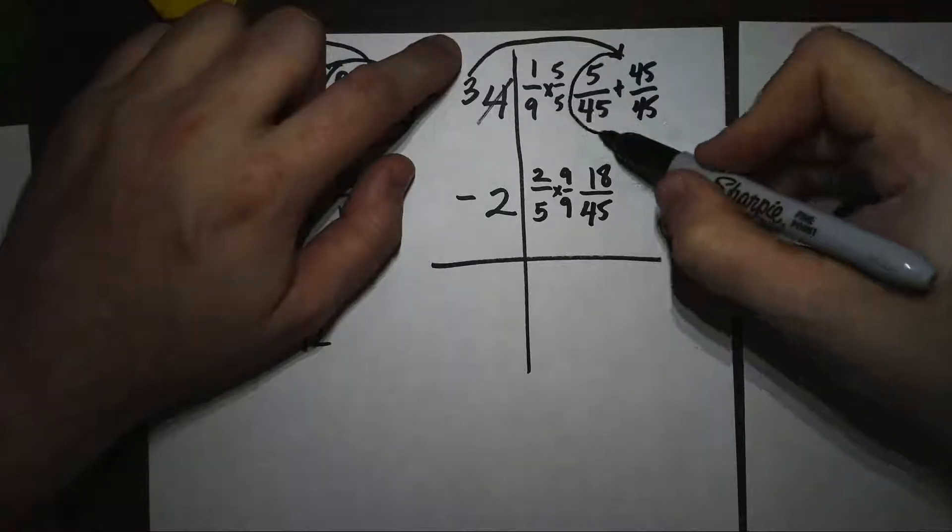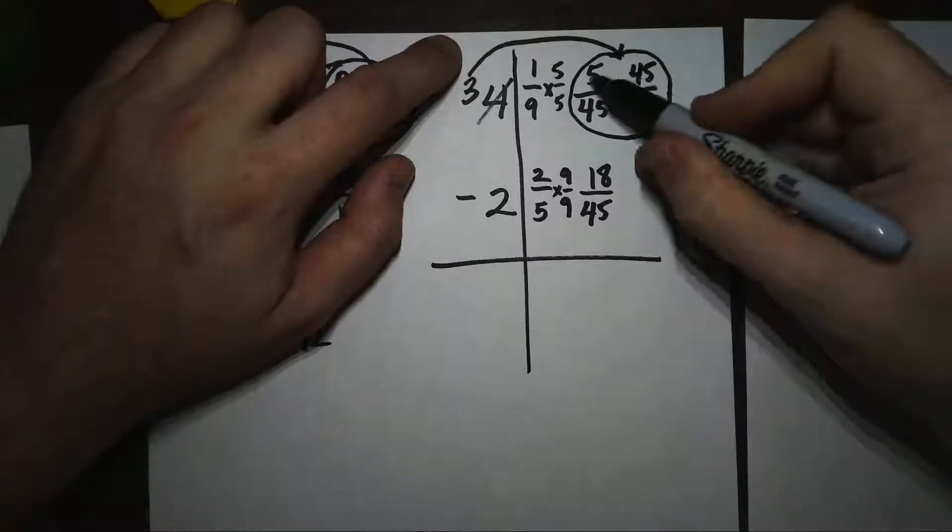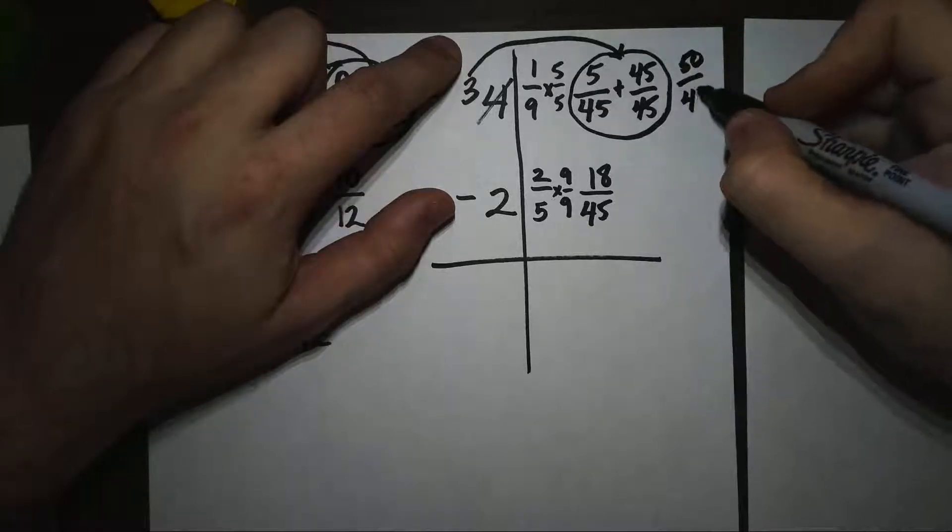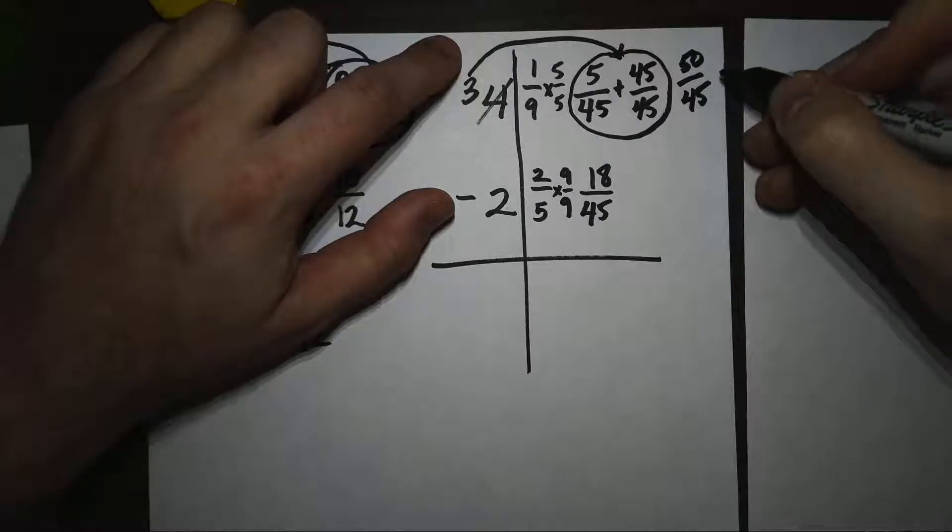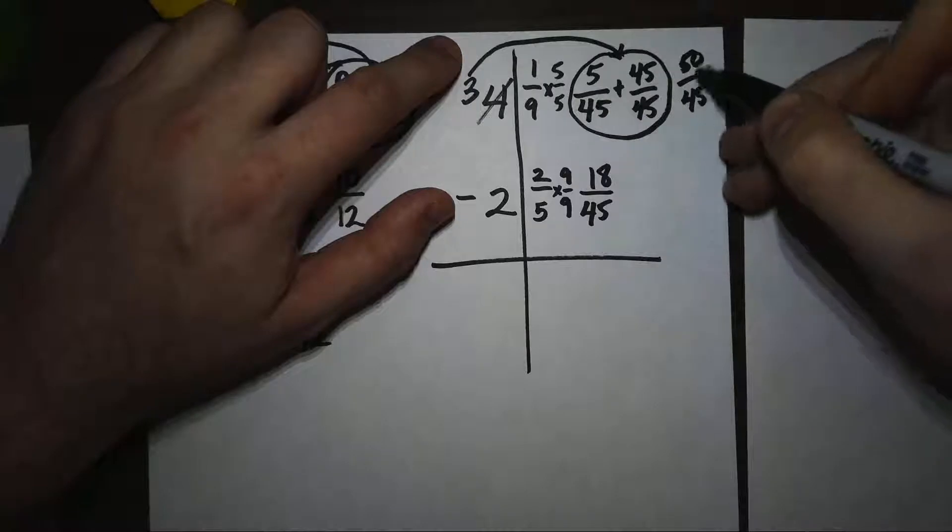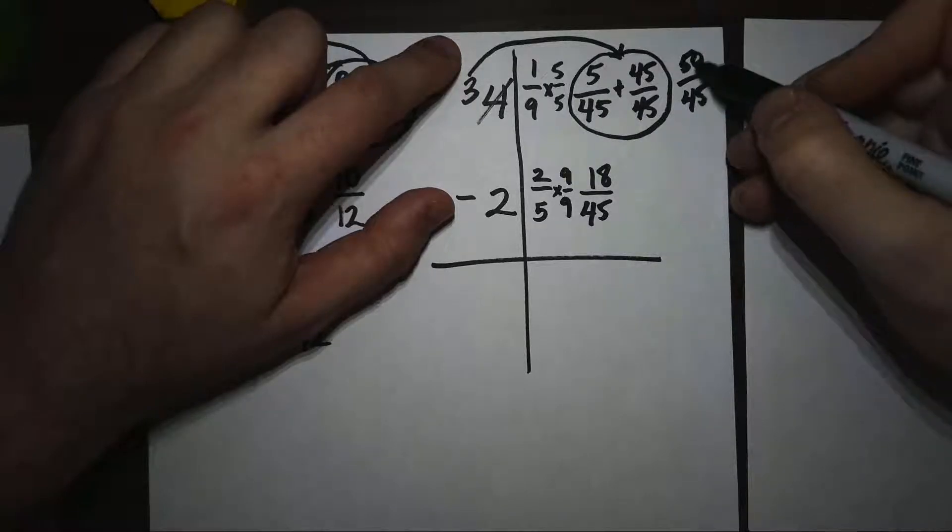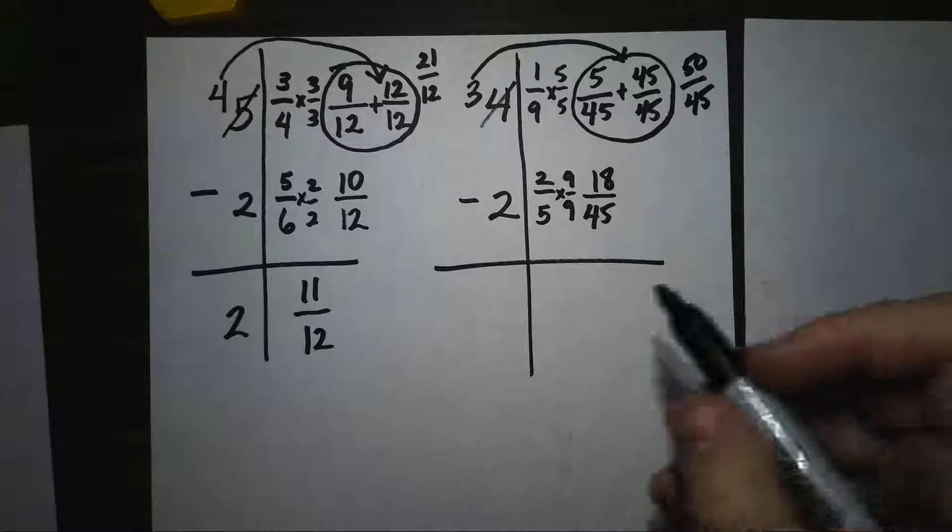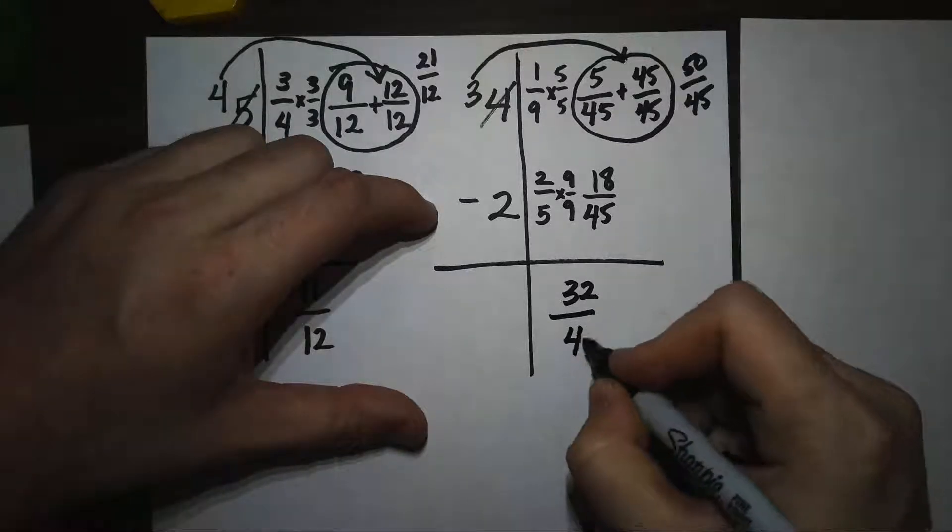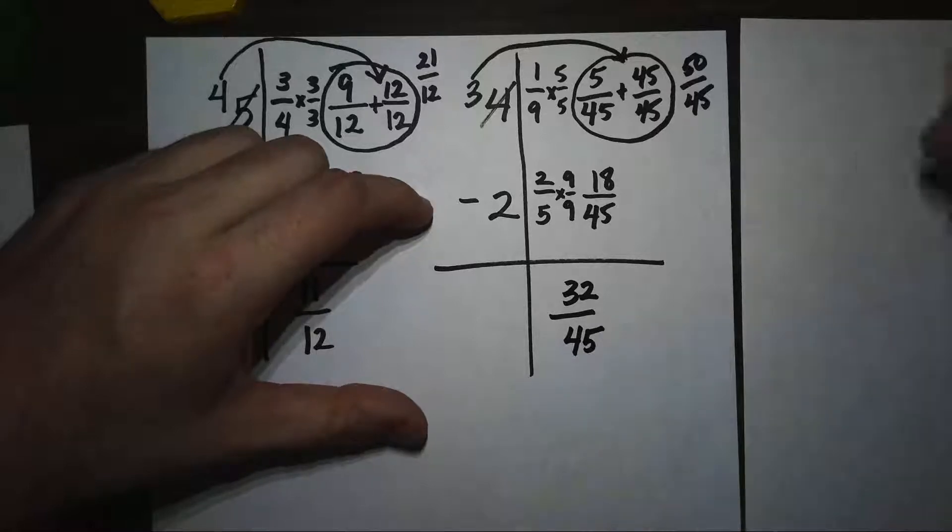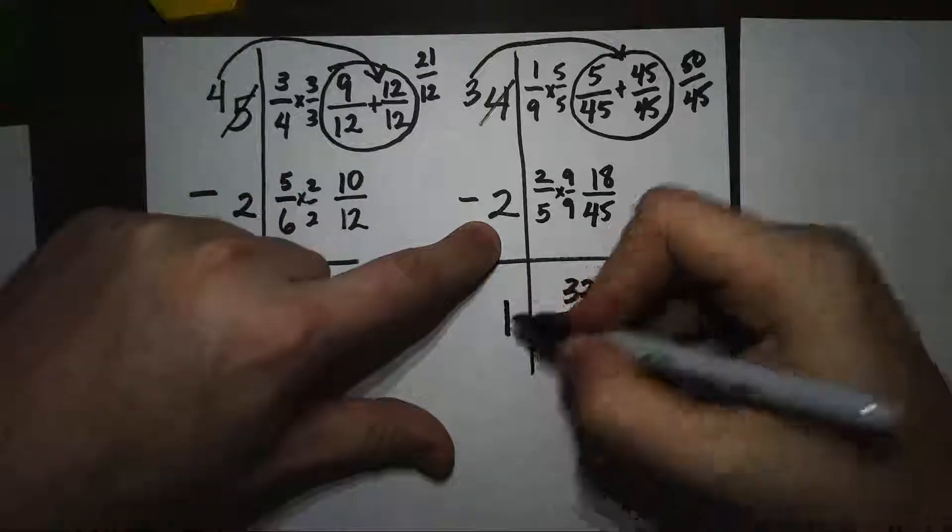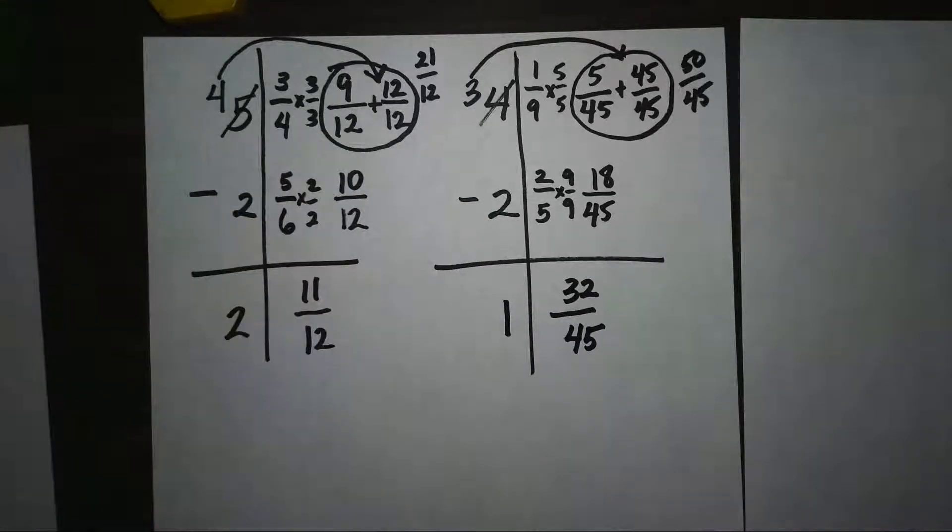So all together on the top up here, I have 5/45 plus 45/45, which is 50/45. Notice that is an improper fraction, and it should be, because I have one whole plus a little bit more. So this really should be an improper fraction. And when I do 50 minus 18, I'm going to get 32/45. And then when I do my whole number part, 3 wholes minus 2 wholes gives me 1 whole and 32/45.